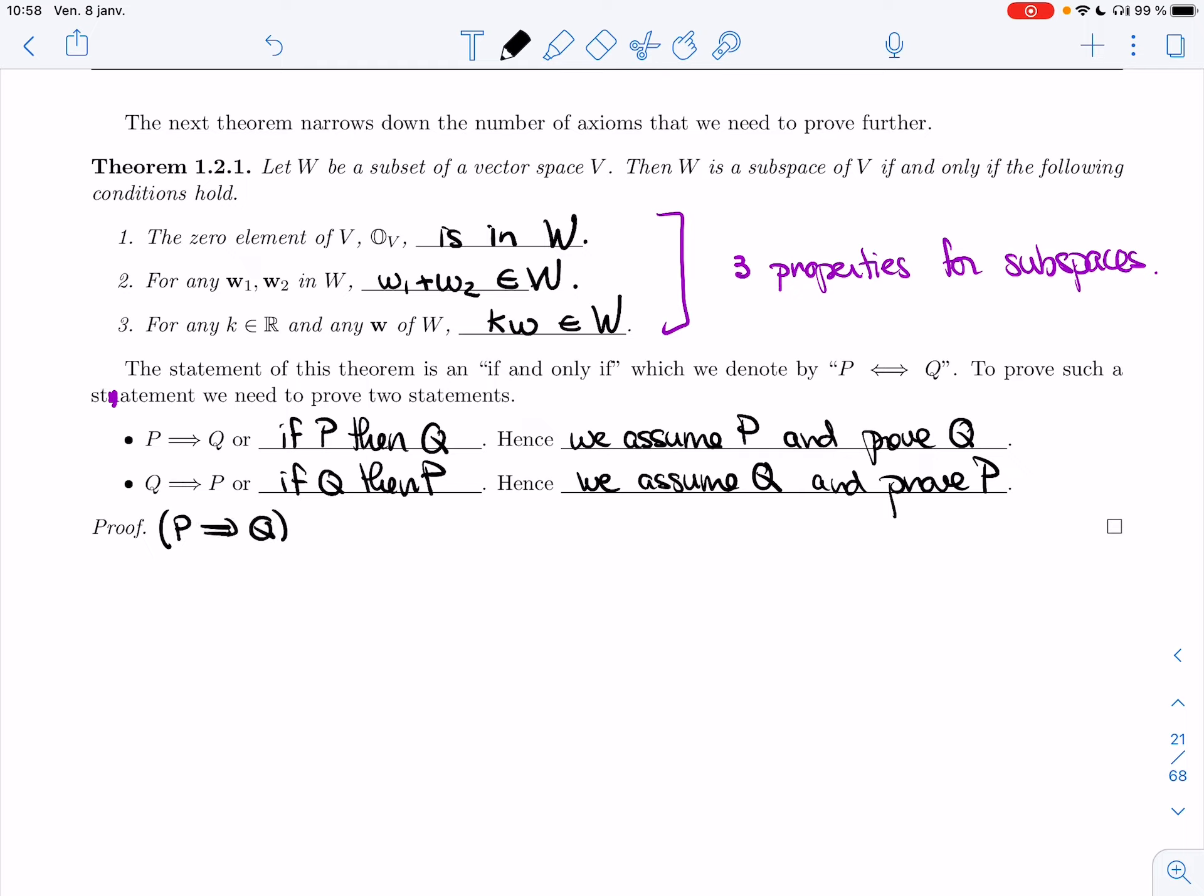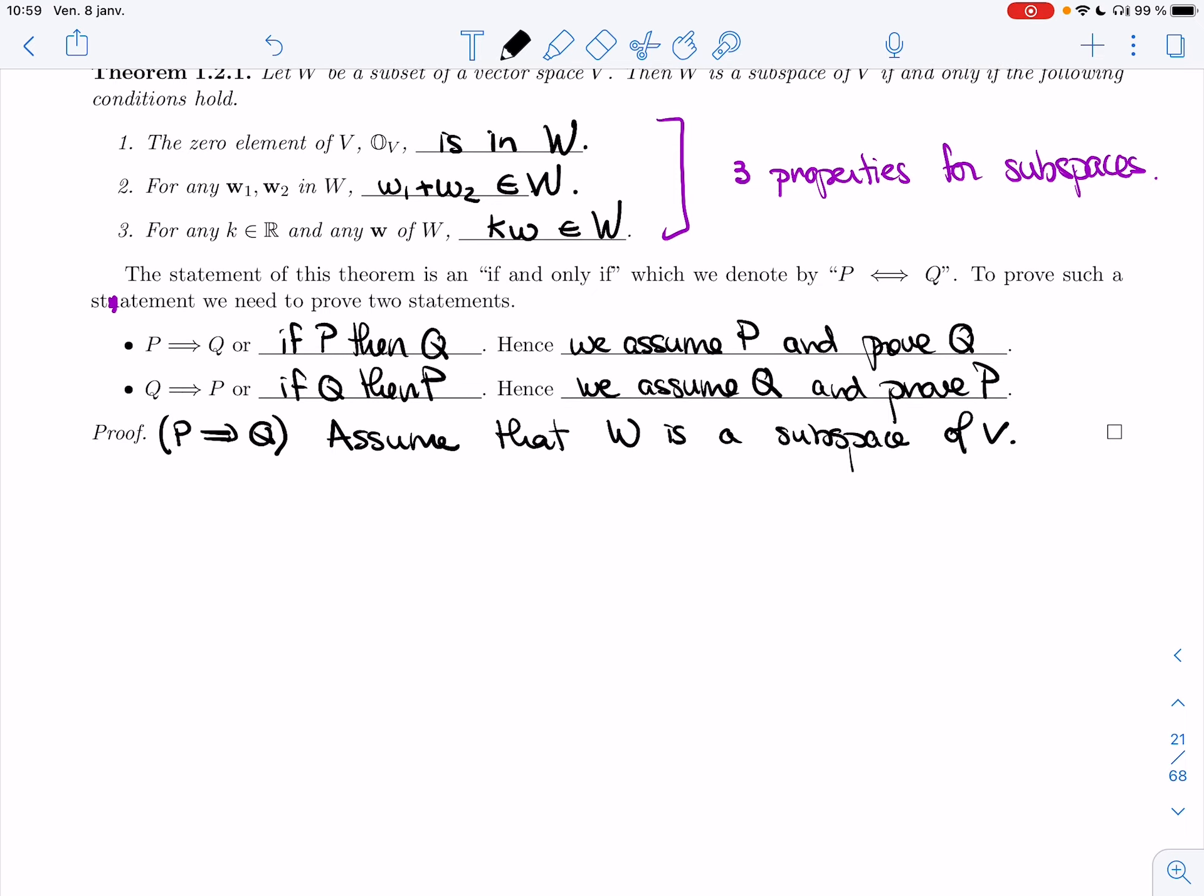Let's prove this direction. So I'm going to assume the first statement. I'm going to assume that W is a subspace, so I know all 10 axioms are true for W, and I will prove these three. That won't be too hard. So I'm going to assume that W is a subspace of V, and I want to prove the three properties.